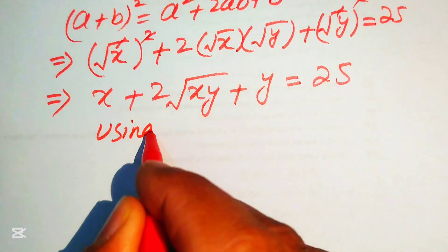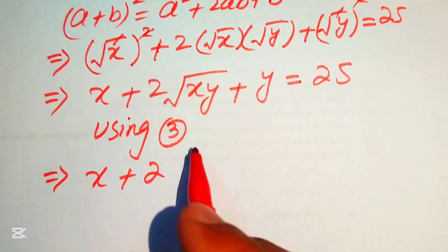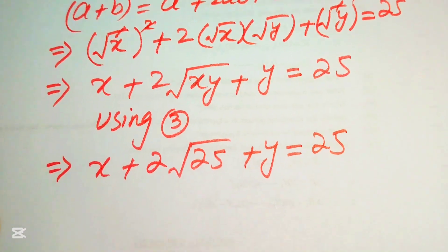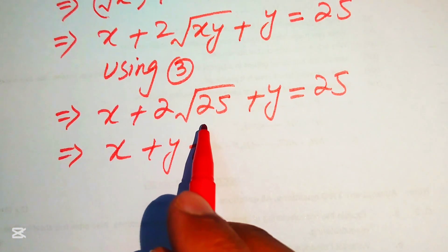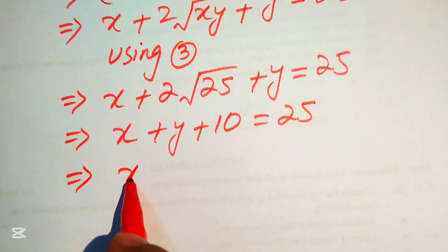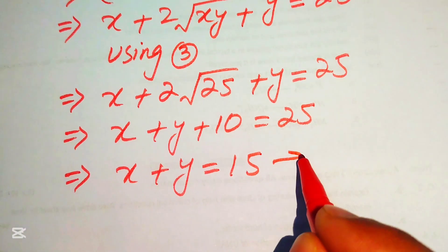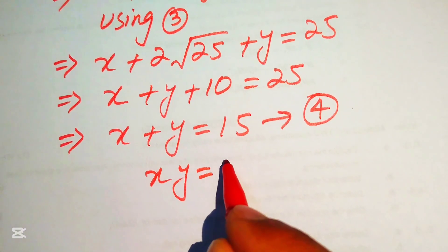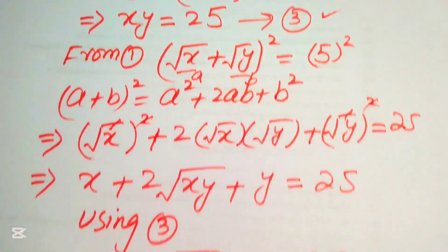We substitute the value of xy from equation number 3, which is 25. So we get x plus 2 times square root of 25 plus y equals 25. Square root of 25 is 5, so 2 times 5 equals 10. Therefore x plus y plus 10 equals 25, which gives x plus y equals 15. We call this equation number 4.